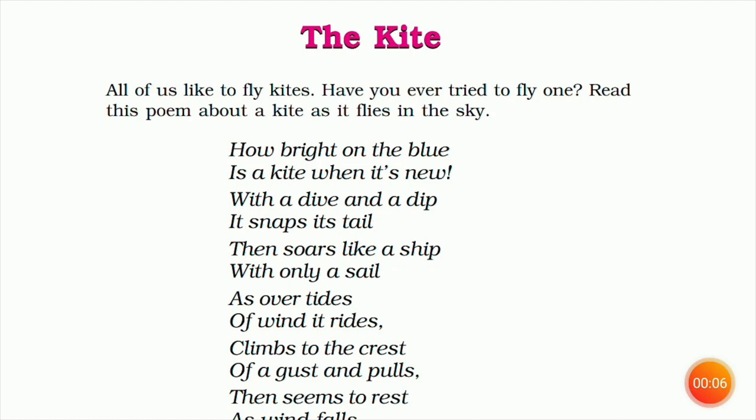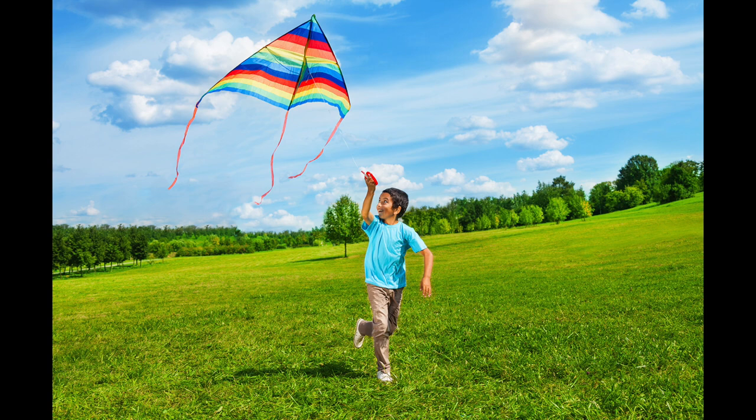The first lines read: 'How bright on the blue is a kite when it's new? With a dive and dip, it snaps its tail.' Here the poet says that the kite, when it's new or during its first flight, looks so pretty and vibrant in the blue. Here 'blue' refers to the blue sky or the clear sky — so when visualized in a clear sky, the kite looks beautiful, vibrant and pretty when it's new.